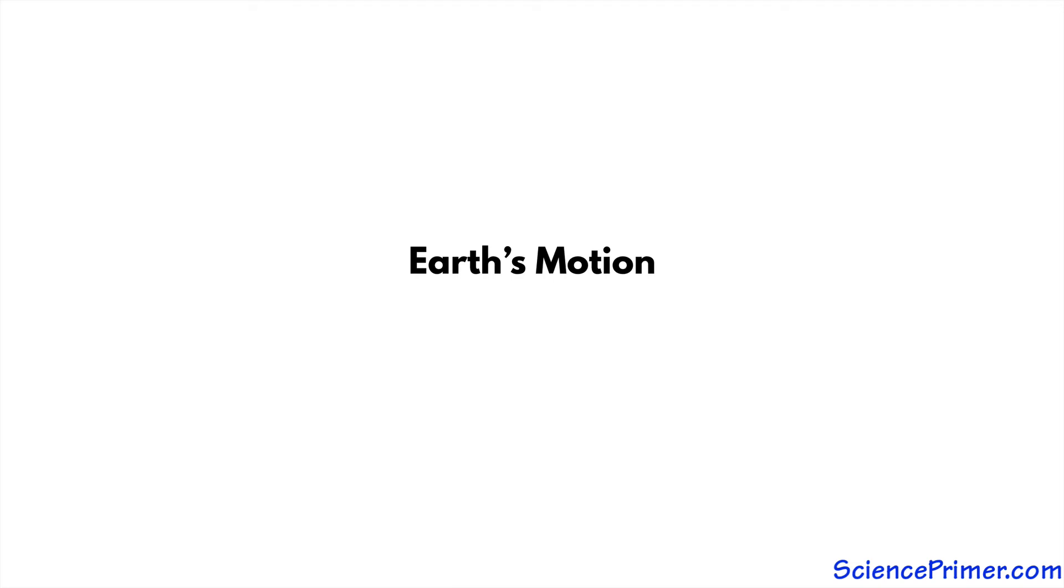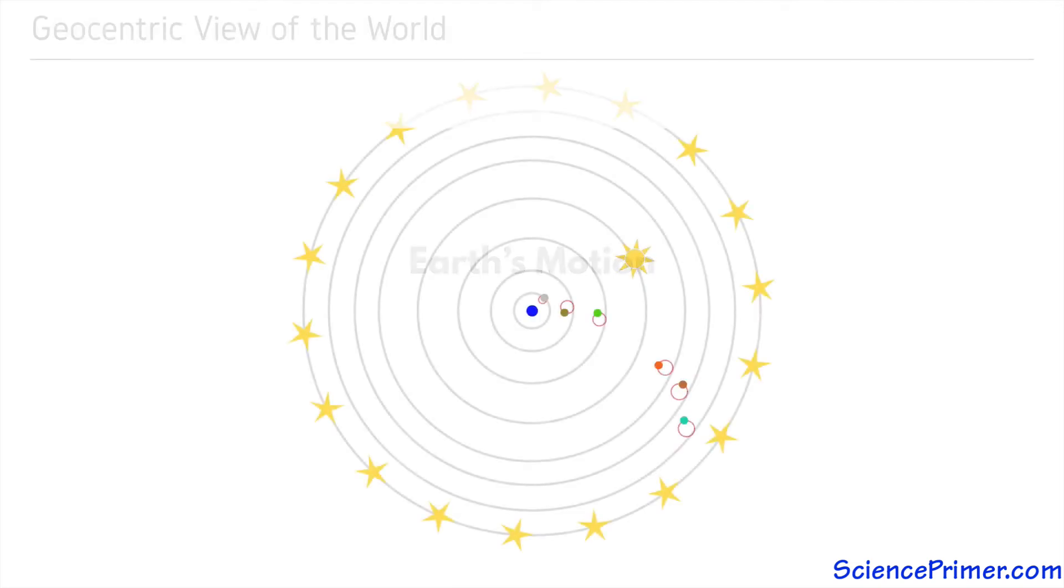For the majority of human history, our understanding of how the world works made it perfectly feasible to think that the Earth was the unmoving center of the universe, and that the sun, moon, and stars all orbited us.